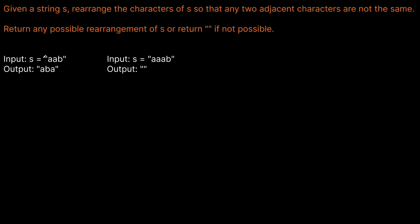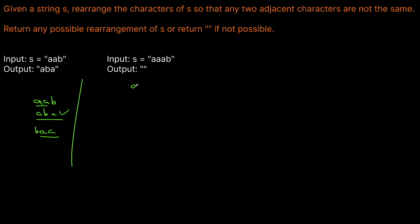Let's look at our first example: AAB. What are the arrangements we could have here? We could leave it the same, AAB. We could do ABA, which is valid because no two characters are the same next to each other. We could do BAA, but that doesn't work because it has double A's, so the only valid one is ABA.